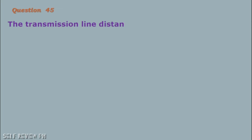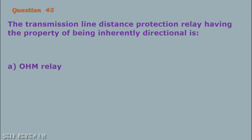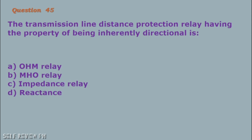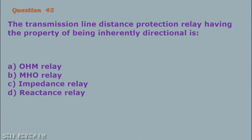Question number 45: The transmission line distance protection relay having the property of being inherently directional is: A. OHM relay B. MHO relay C. Impedance relay D. Reactance relay. The correct answer is letter B, MHO relay.